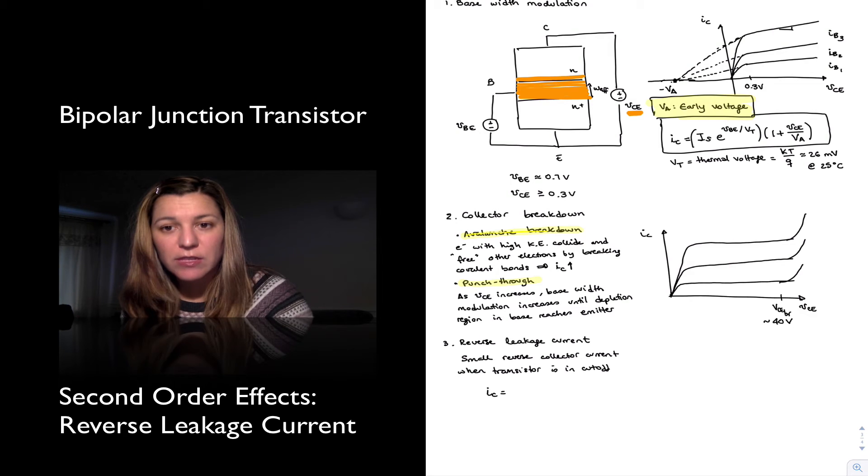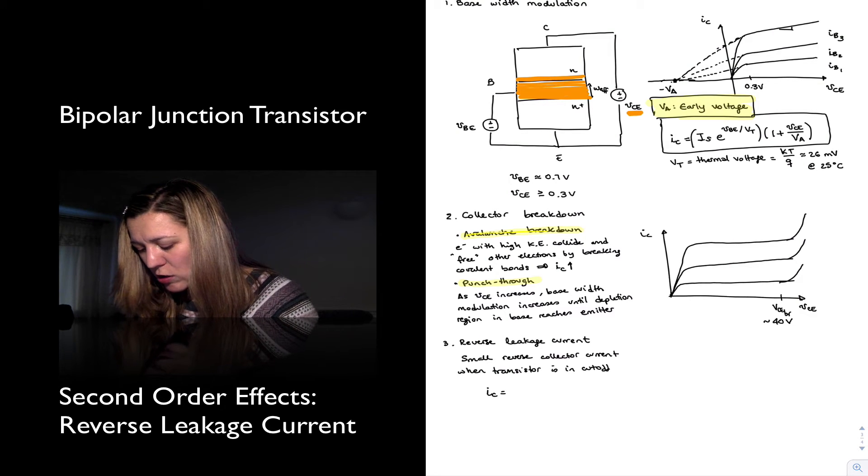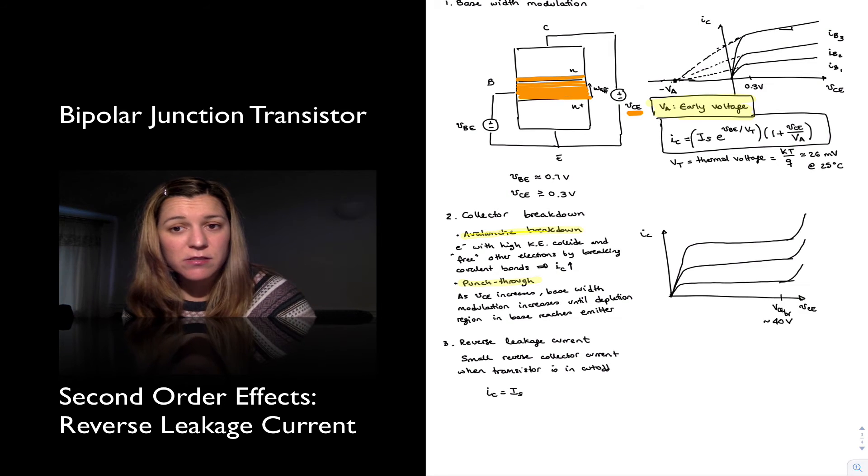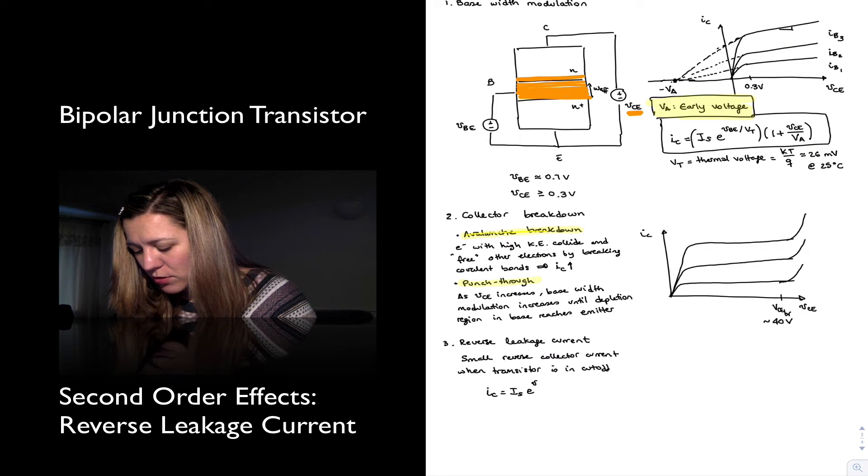but since we have already established that we are going to approximate the collector current to the emitter current, will be equal to IS, which is called the saturation current and it depends on the device physics and geometry, e to the VBE over the thermal voltage.